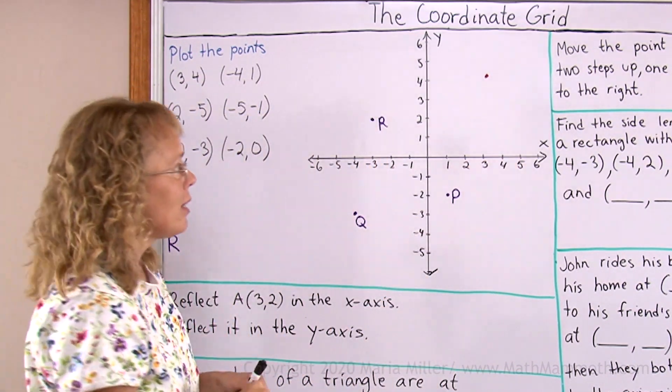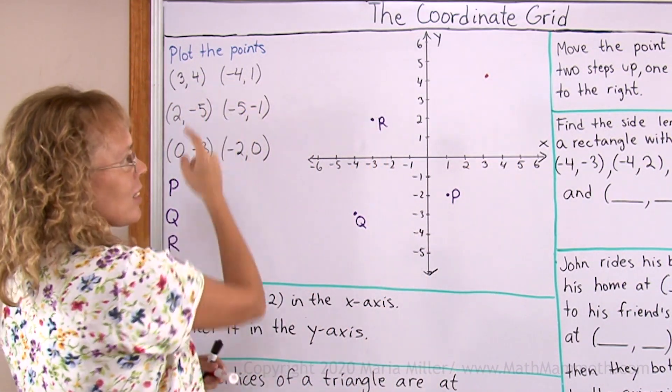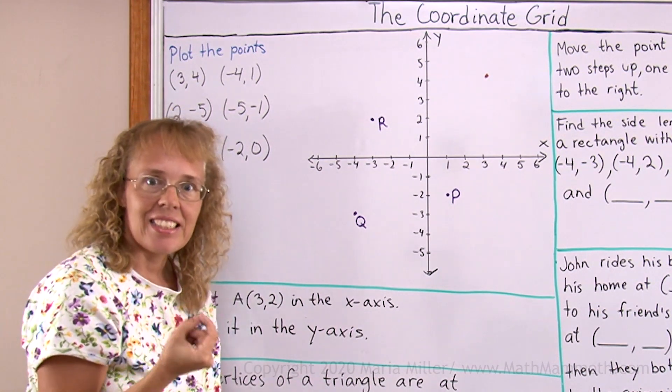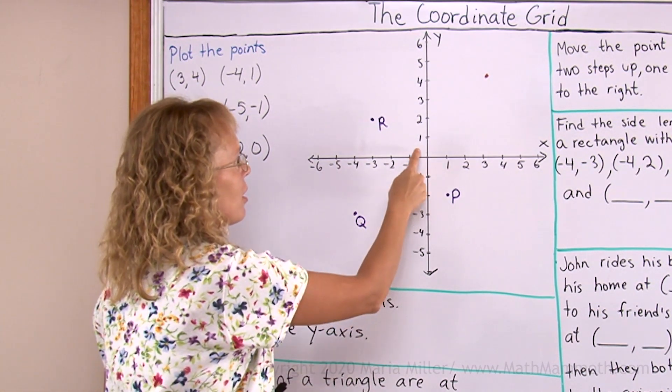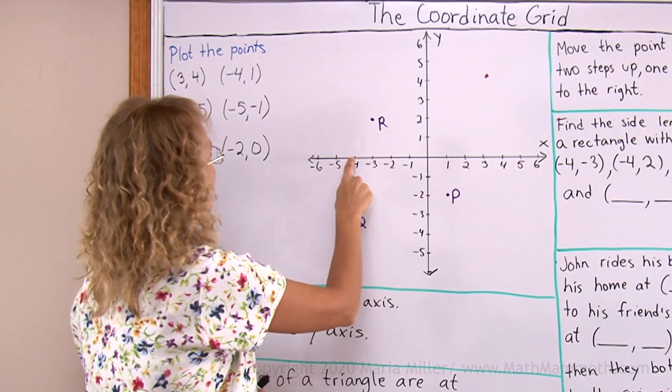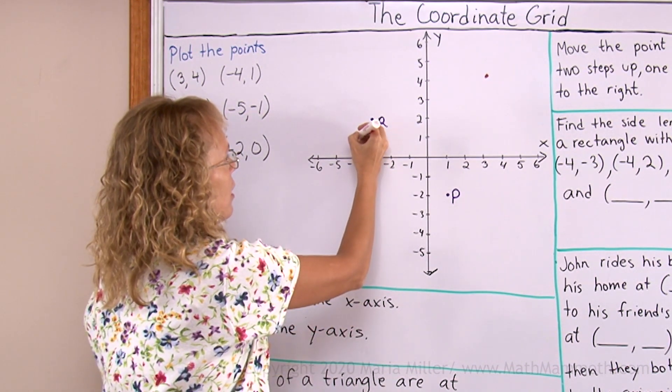The next one, (-4,1). This is the x-coordinate, so we go on the x-axis to -4 or negative 4. It's over here. And then 1 means we go up 1 over here.